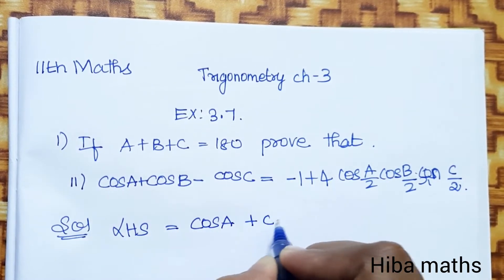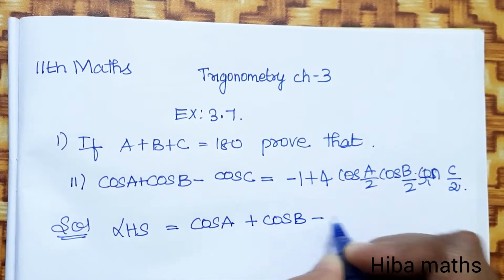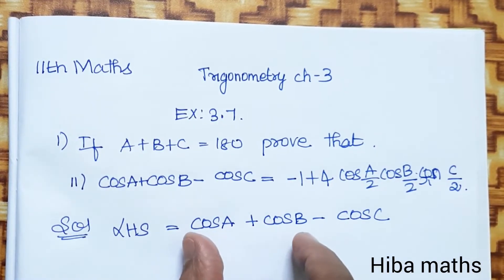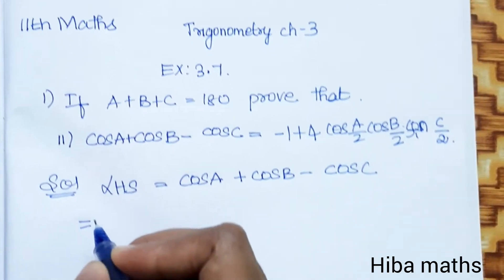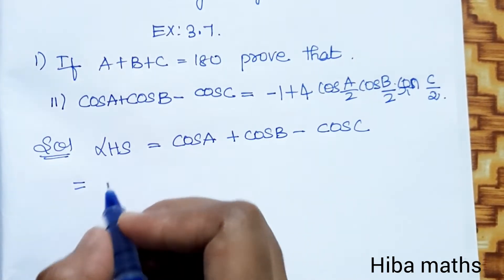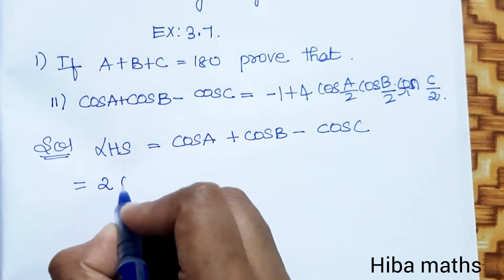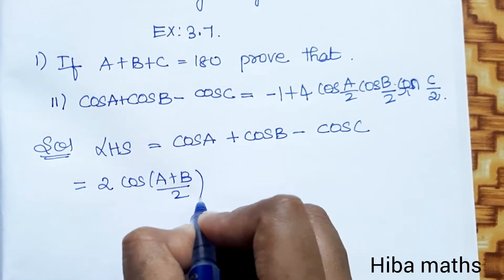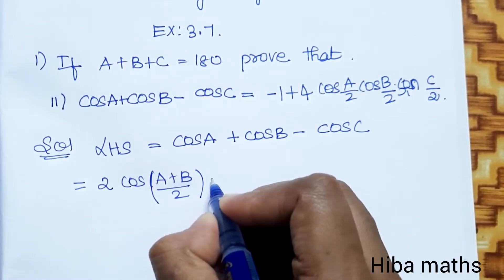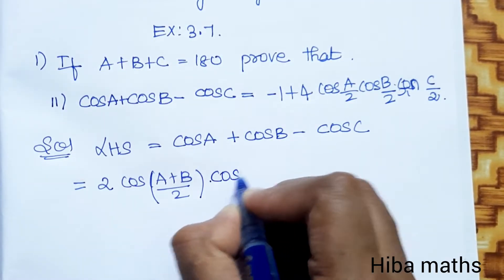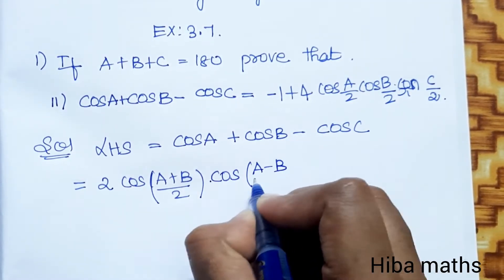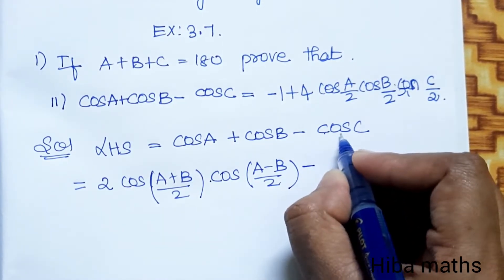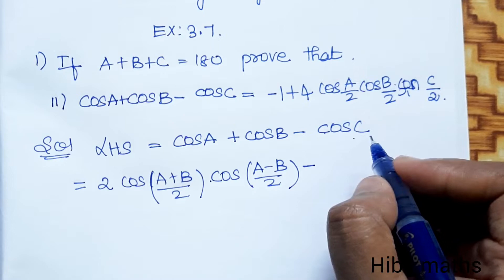For cos A plus cos B minus cos C, first we solve cos A plus cos B using the sum-to-product formula: 2 times cos((A+B)/2) times cos((A-B)/2), minus cos C. Now for cos C, we will substitute using a known identity.